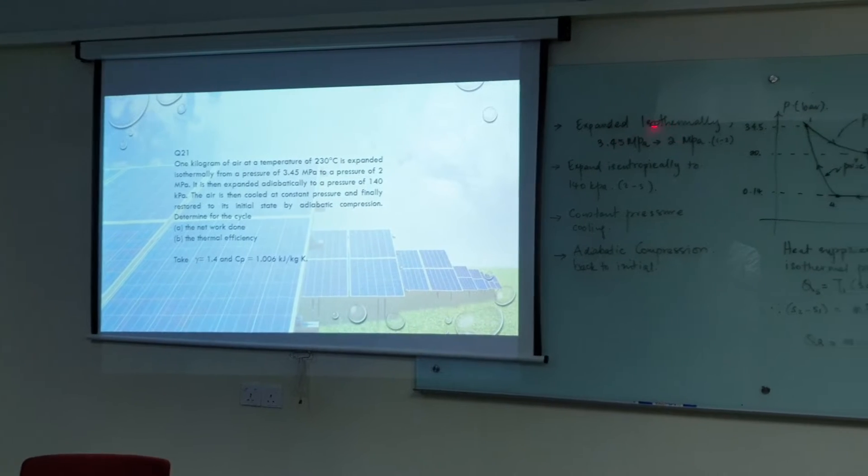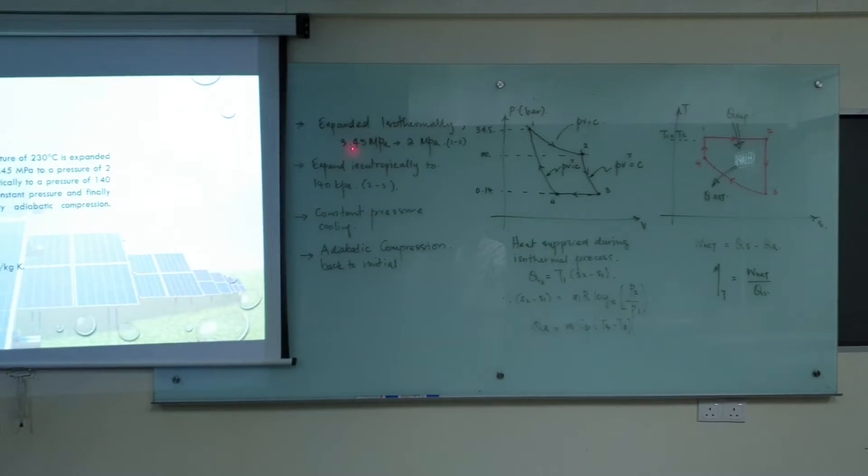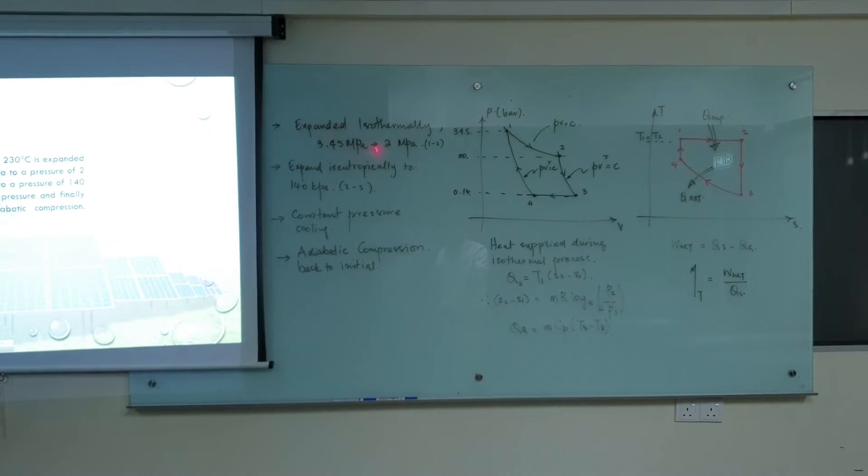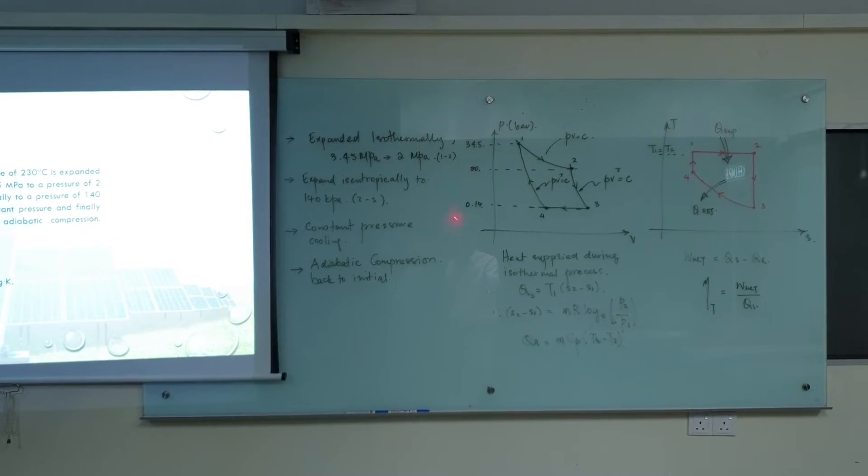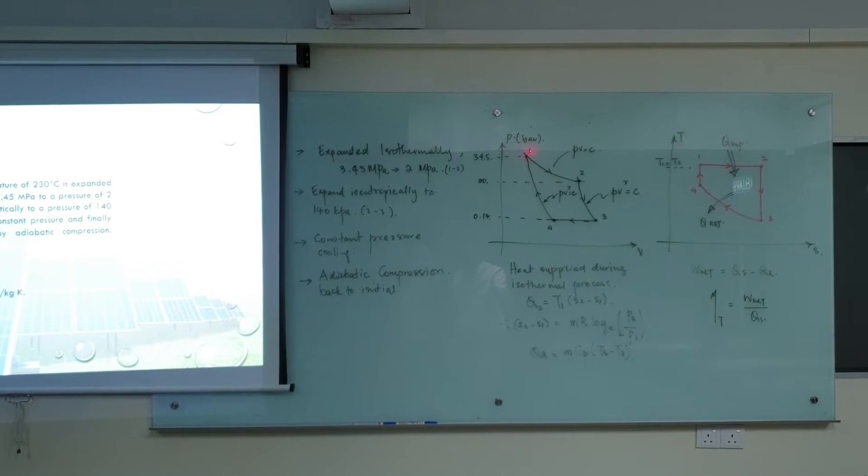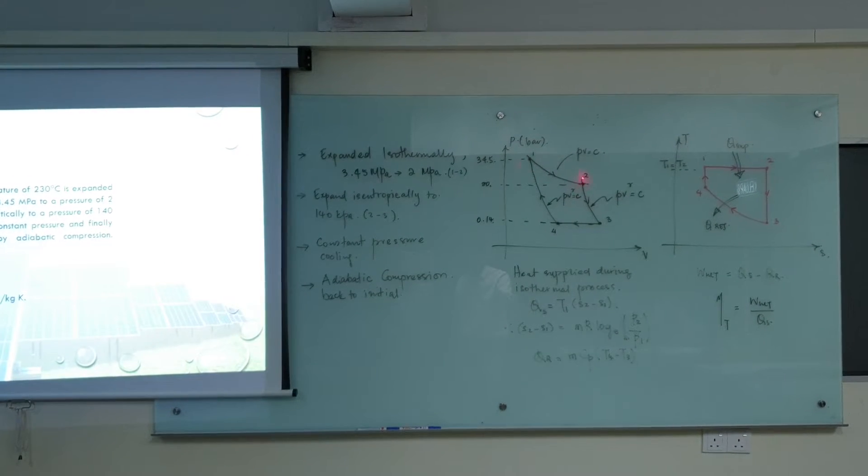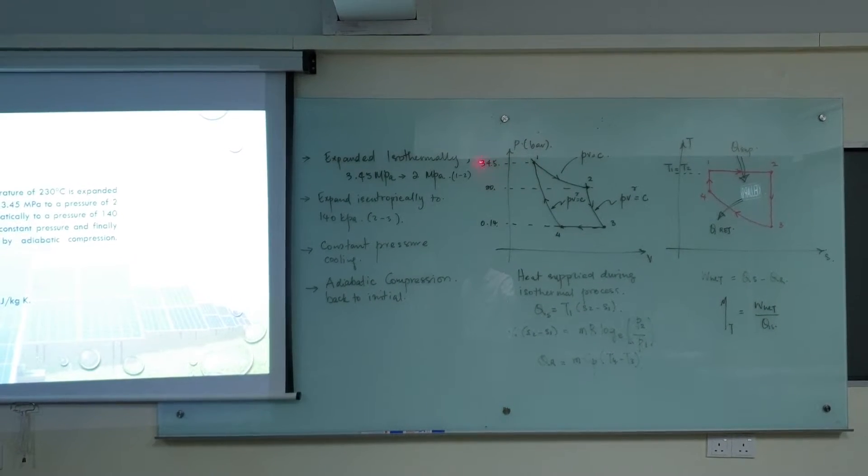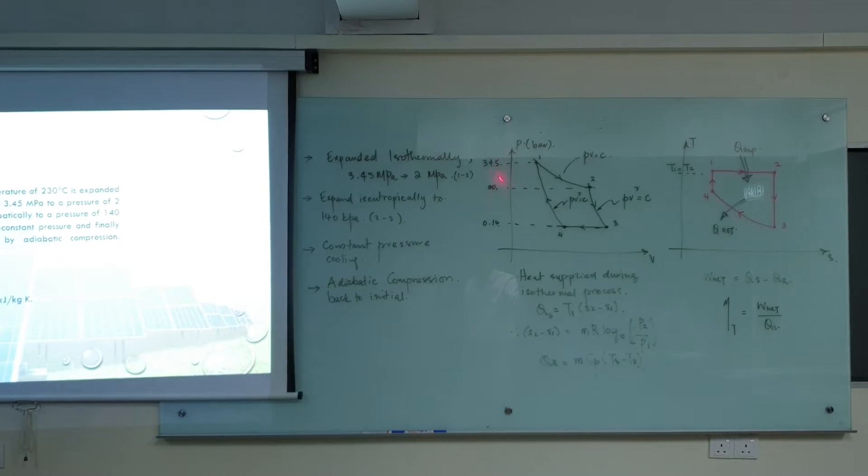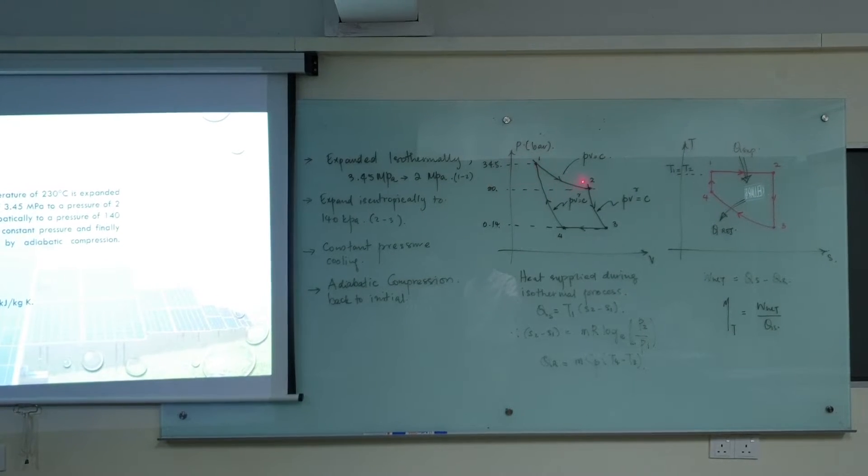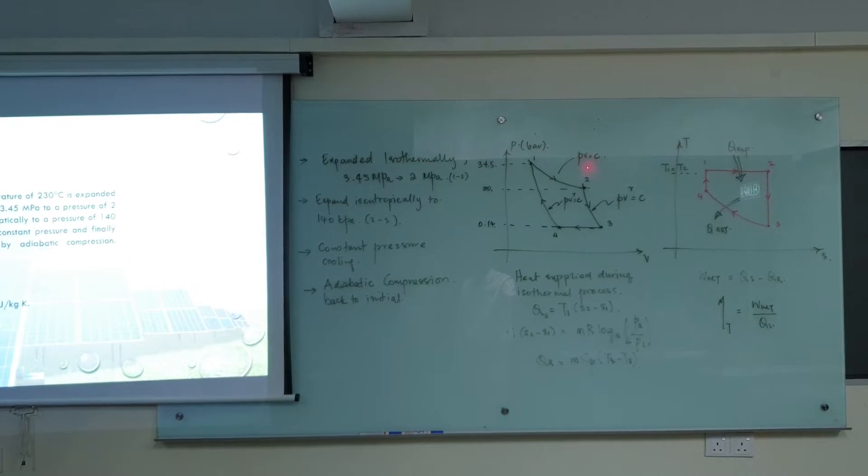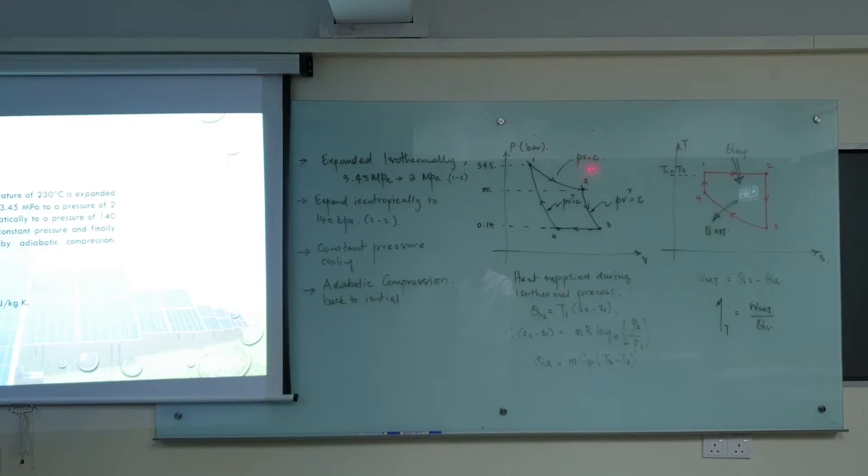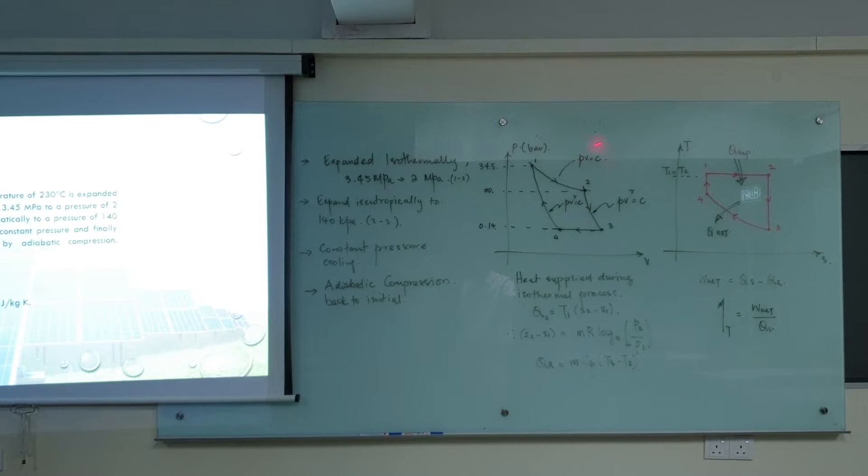So expanded isothermally from 3.45 MPa to 2 MPa. Based on the PV diagram that I have drawn, you can see from 0.1 here to 0.2, the pressure dropped from 34.5 to 20 bar. So 0.1 to 0.2 obeys the law PV equal to C because it was stated that this is an isothermal process.